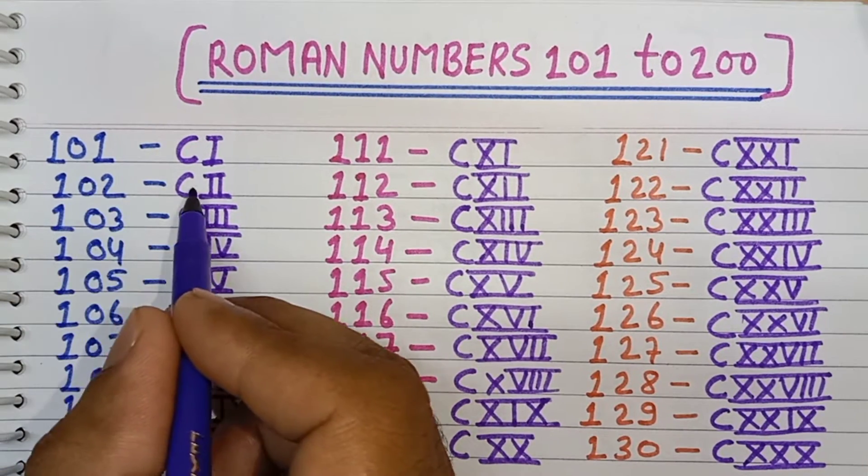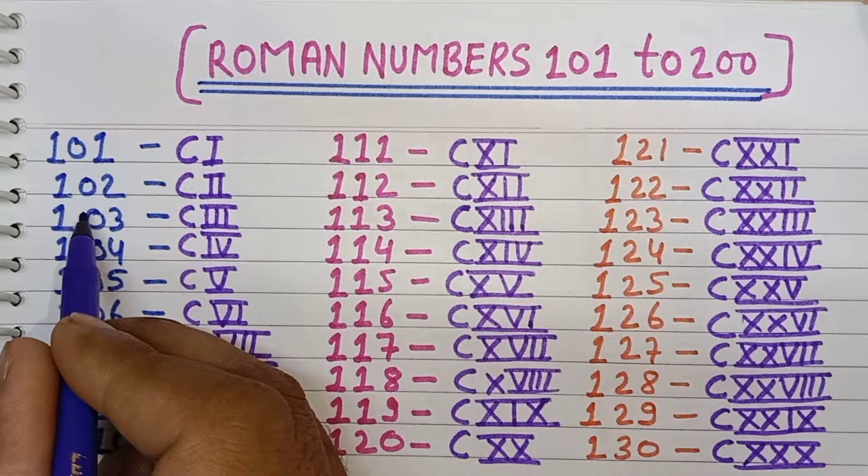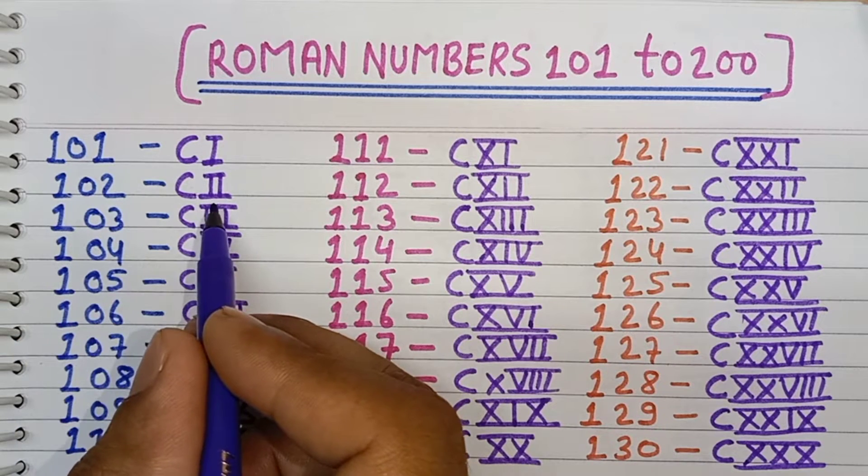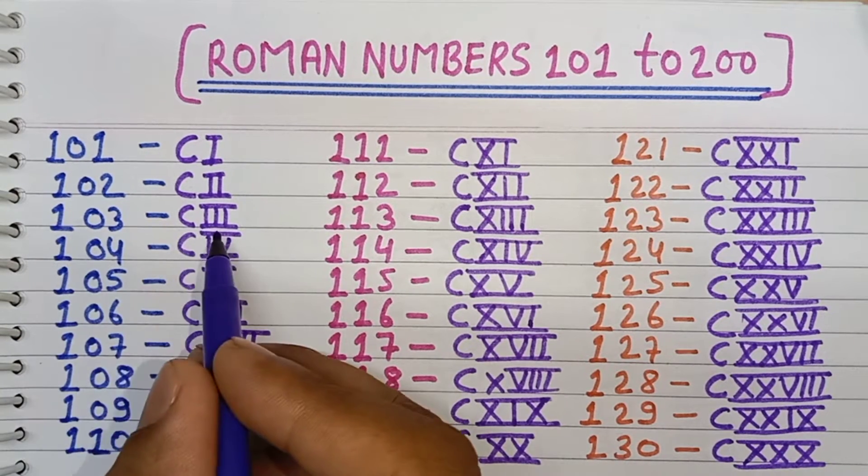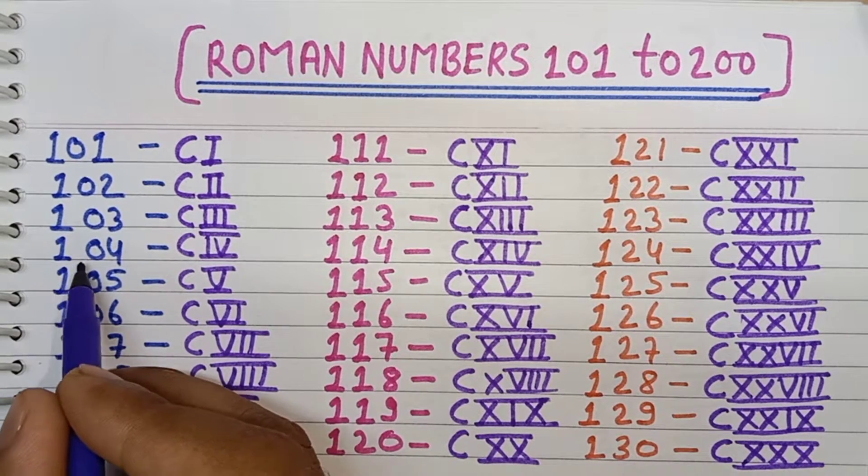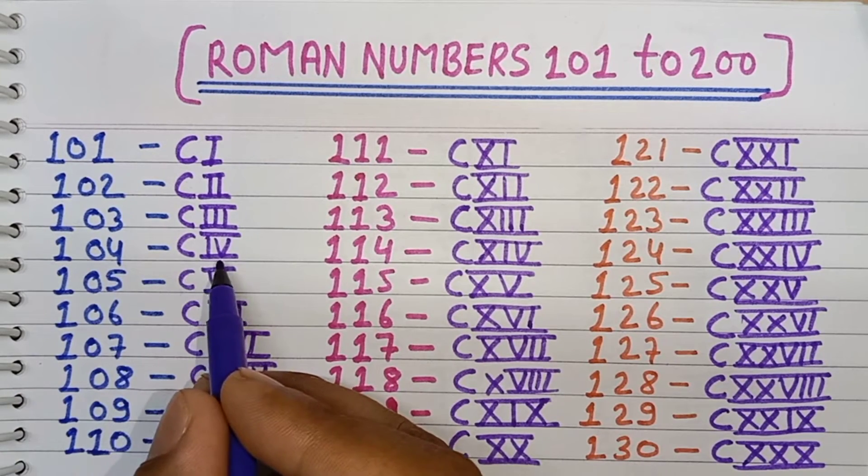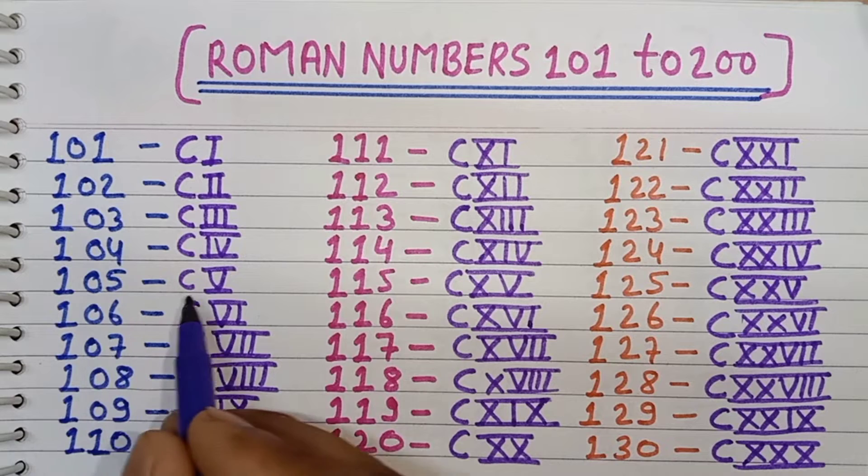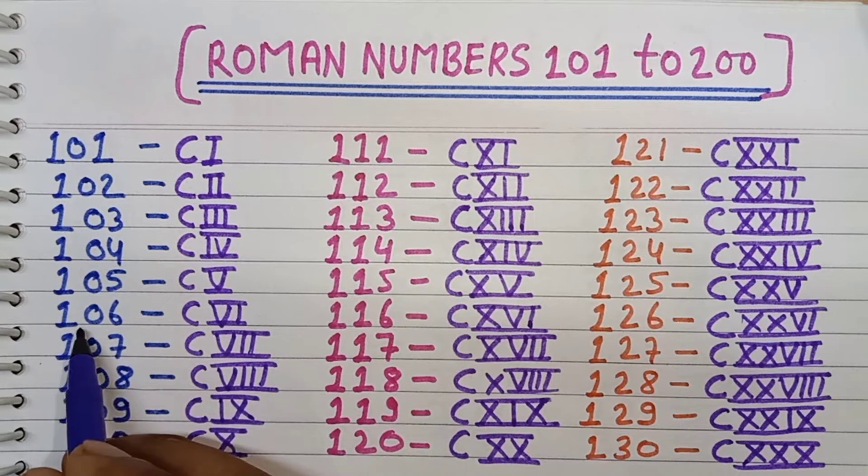CI, 102 CII, 103 CIII, 104 CIV, 105 CV, 106